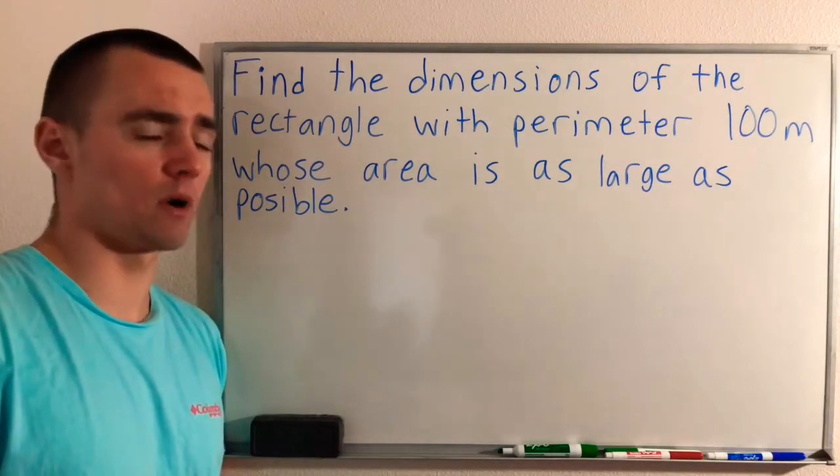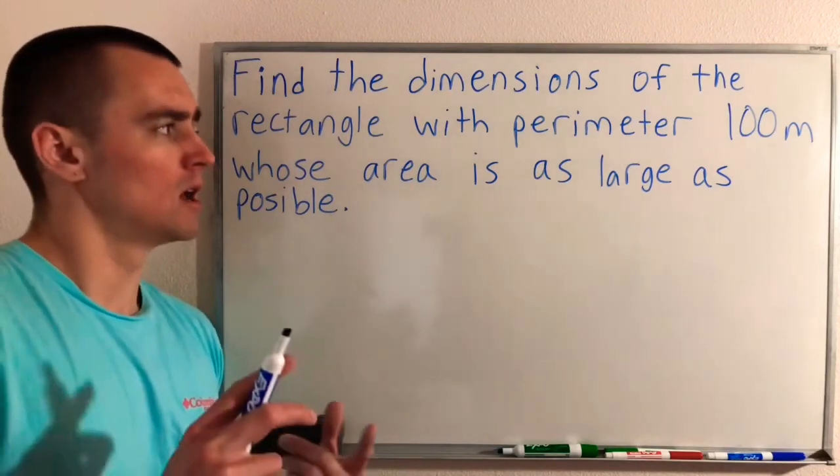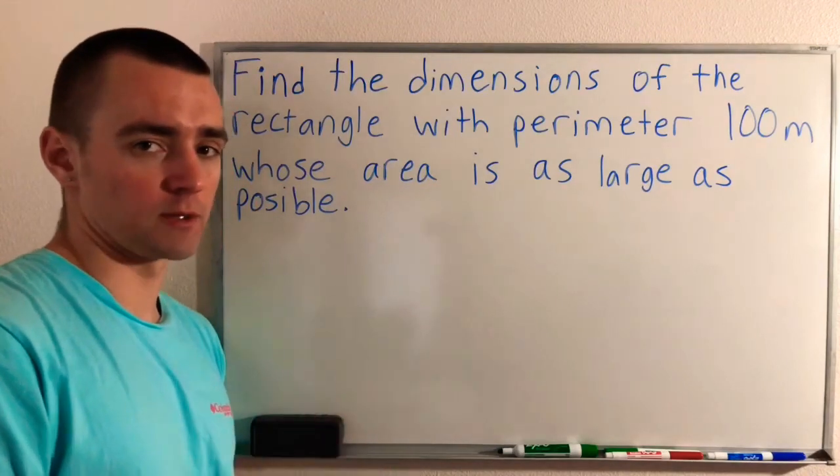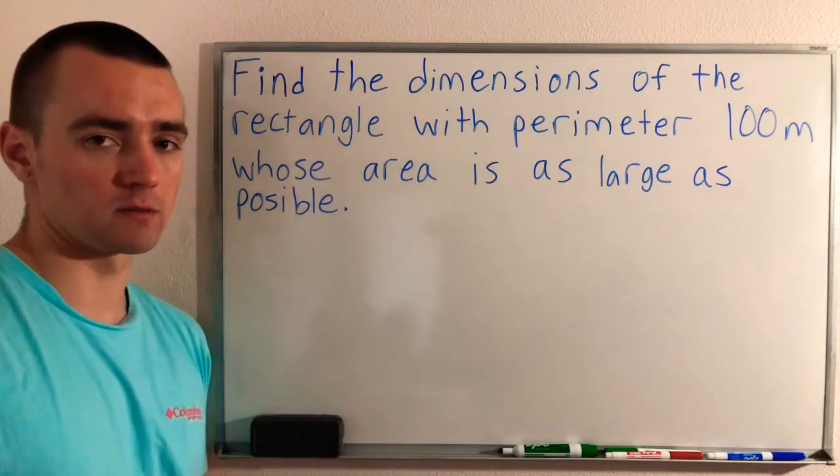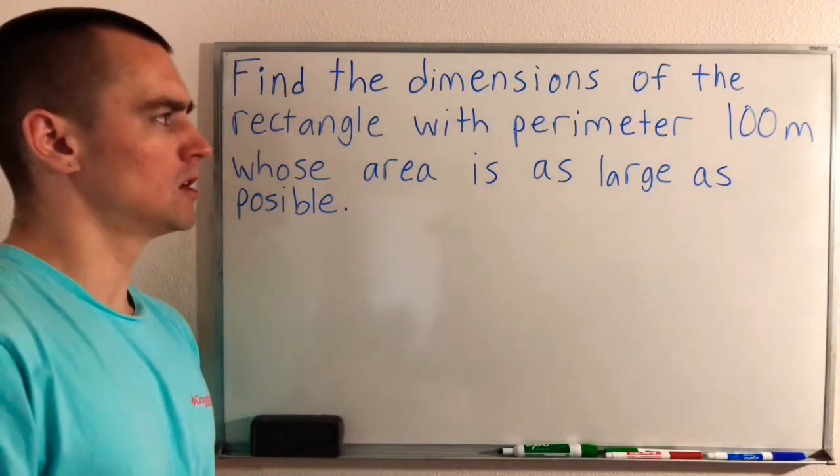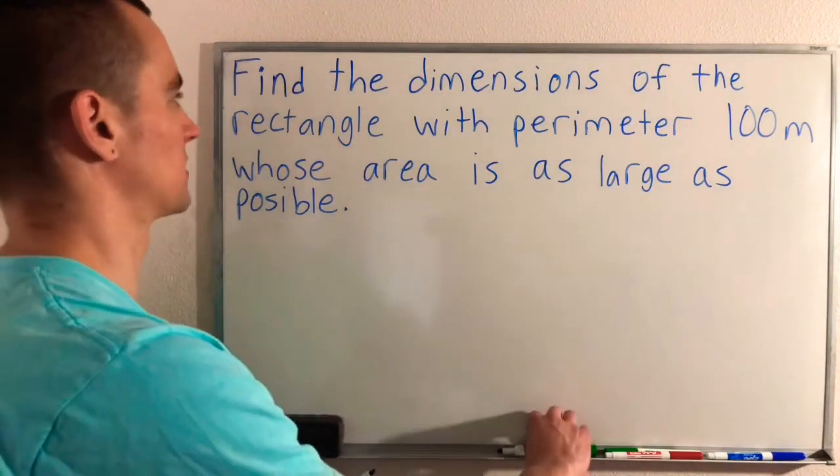We're going to find the dimensions of the rectangle with perimeter 100 meters whose area is as large as possible. This is a pretty common type of optimization problem that you might run into. When you see a problem like this, there's kind of two things that you want to look at. You want to come up with the equation that you're trying to optimize, whether it's find the minimum or the maximum. And then you also want to sort through what restrictions you've been given.